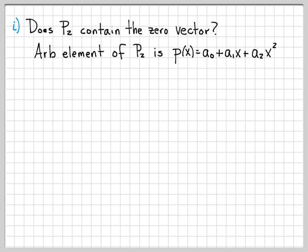The set P2 contains an infinite number of polynomials as we choose all possible combinations of a₀, a₁, and a₂. We can figure out if it contains the zero vector by letting a₀=a₁=a₂=0. In that case, what would we have? We would have 0+0+0=0.